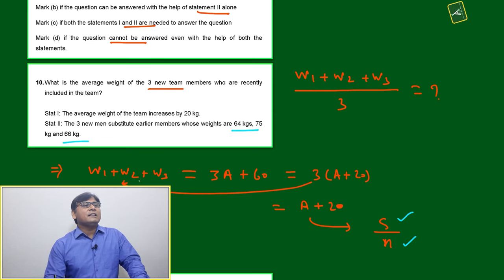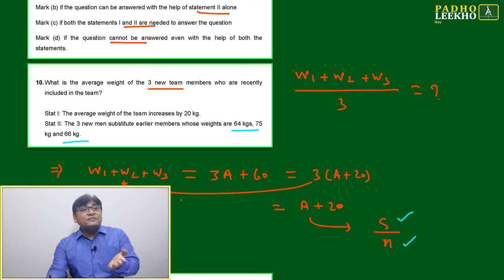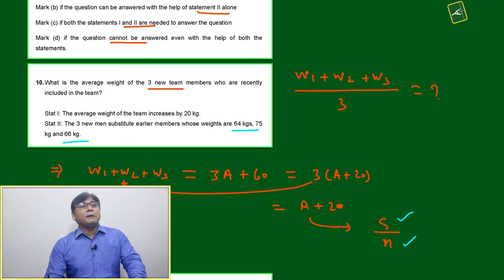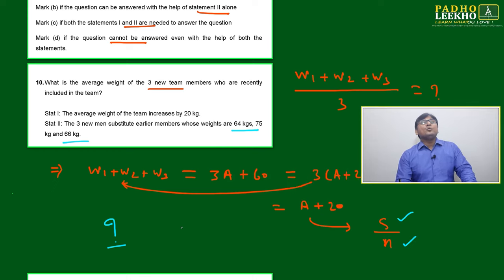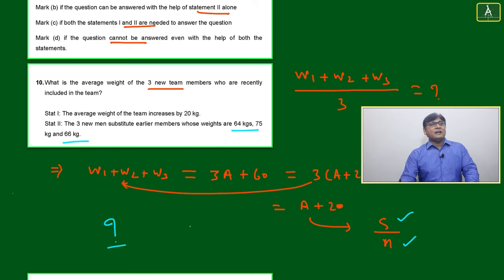Statement 2 we'll try to read. The three new members substitute earlier members whose weights were 64 kg, 75 kg, and 66 kg. They replaced 64, 75, and 66, but what is the new member's weight, that is not given. Then statement 2 also is not sufficient.